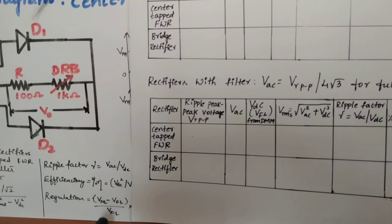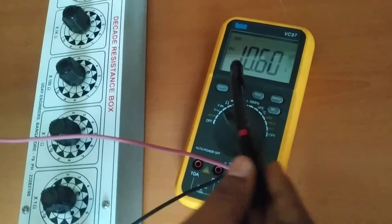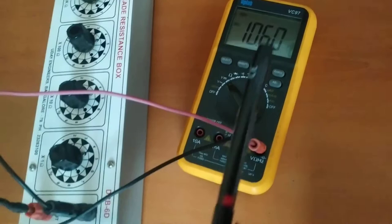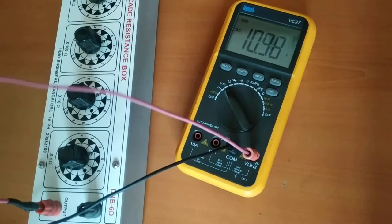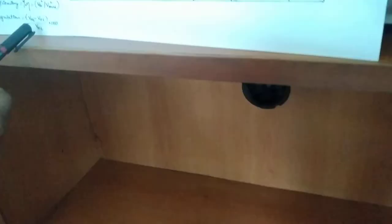You can see the digital multimeter reading — whatever voltage you are getting is the V full load value. To calculate V no load, remove one terminal of the DRB box. The voltage you then get is 10.98 volts, which is your V no load value. Substitute into the percentage regulation formula to get the percentage regulation value.